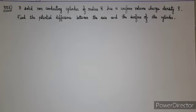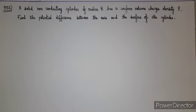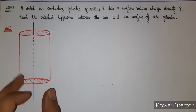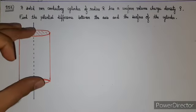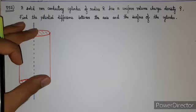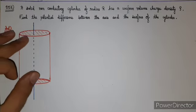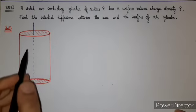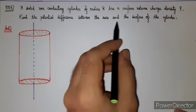In this video we will discuss question number 952. A solid non-conducting cylinder of radius R has a uniform volume charge density rho. We have to find the potential difference between the axis and the surface of the cylinder. The uniform volume charge density means charge is distributed throughout the entire volume of this cylinder.